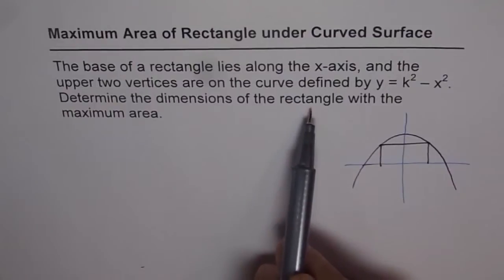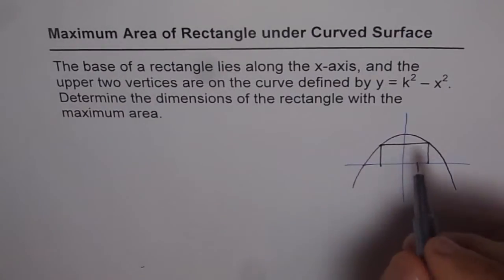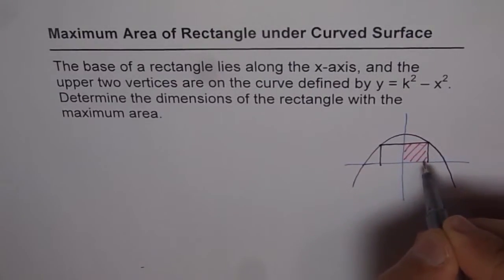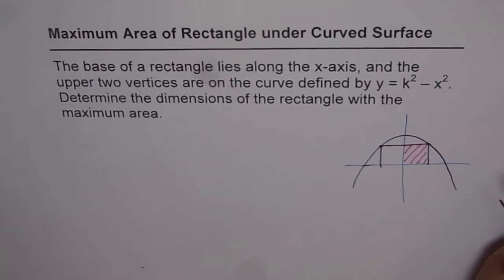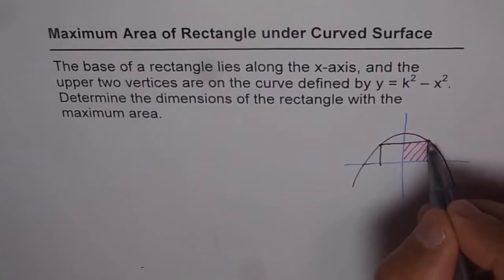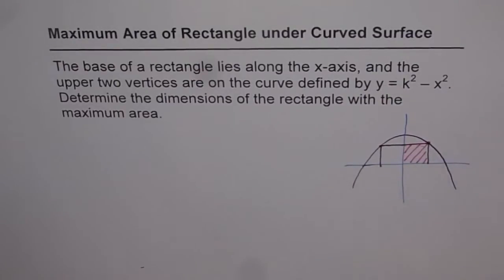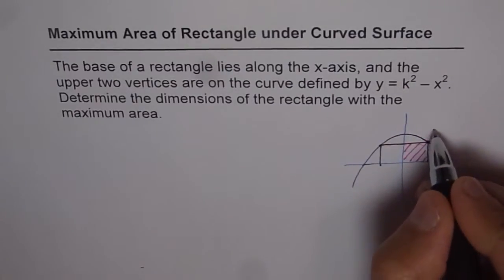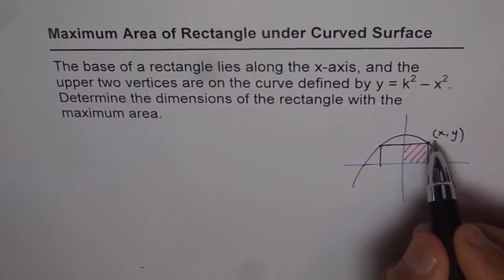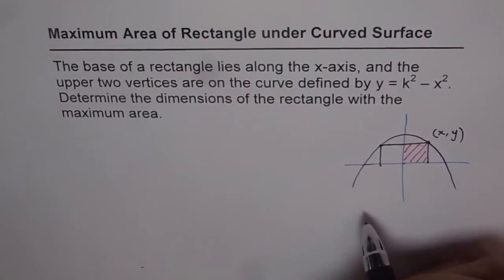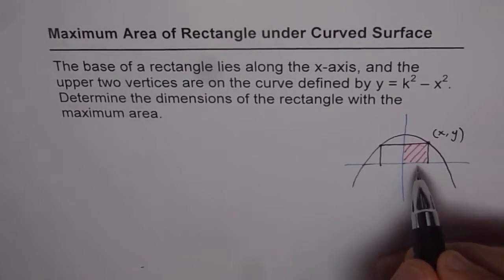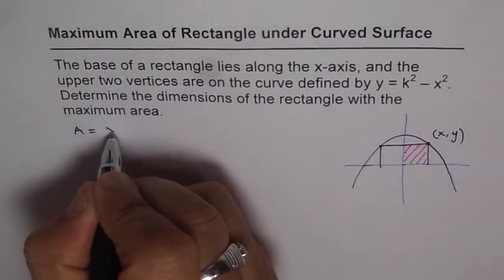To determine the dimensions of the rectangle with maximum area, we can consider the area of just one half. If this half-area is maximum, then the whole area is also maximum. From symmetry, we only need to consider one side. Let's say the upper-right vertex is the general point (x, y) on the curve. Then one dimension is x and the other is y, so the area of the shaded half-rectangle equals x times y.